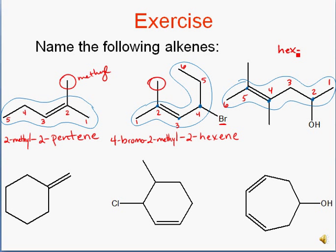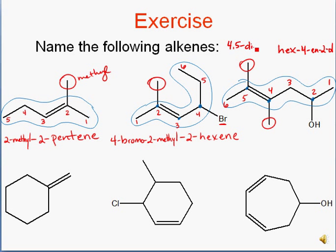When you have multiple functional groups in the same compound, you need to list the numbers in front of the suffix. So this is going to be hex-4-ene-2-ol, so that we know the alkene starts at carbon 4 and the alcohol is at carbon 2, and not the other way around. The only other groups attached are a couple of methyl groups — one at carbon 4 and the other at carbon 5. So it's 4,5-dimethyl-hex-4-ene-2-ol.